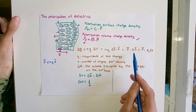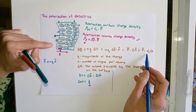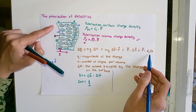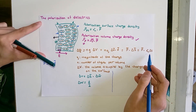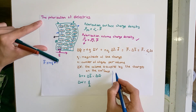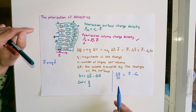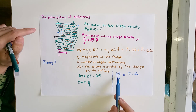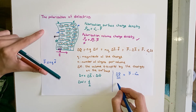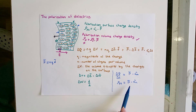The surface area vector delta_s is represented by the normal direction, denoted by the unit normal vector a_n, multiplied by the scalar area delta_s. After substitution and dividing both sides by delta_s, we obtain that delta_q divided by delta_s — the total charge crossing the surface divided by the surface area — is the polarization surface charge density. We have thus successfully proved that the polarization surface charge density equals the dot product between the polarization vector and the normal unit vector.